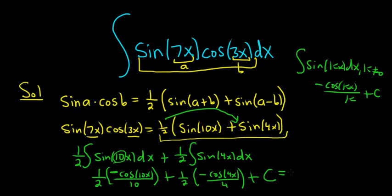Now we just multiply 2 in 10, so it's negative 1 20th cosine 10x, and then minus 1 8th cosine 4x. And then we have the plus c. And that would be the final answer.